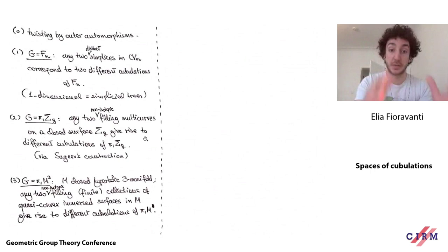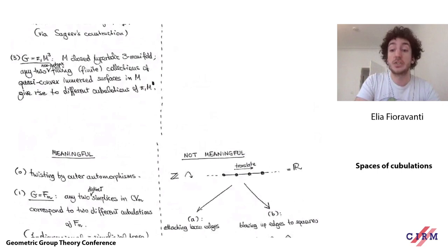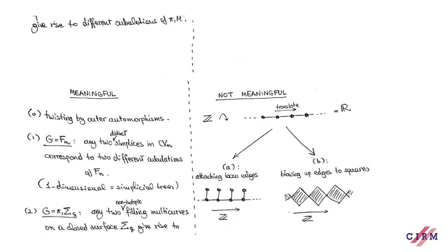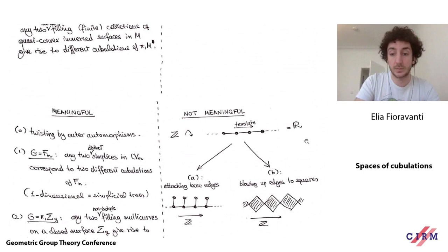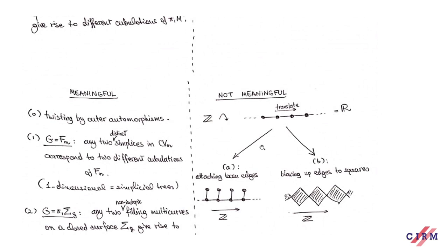These are all nice examples based on the geometry of specific groups. Now let me describe ways of changing a cubulation that are not meaningful — because they're not based on the geometry of any group. Let me show them in the case of Z acting on the real line: we cubulate the real line by putting a vertex at every integer point and joining them by edges, with Z translating one notch to the right. There are two procedures I'll call A and B — they work in absolute generality and will come up later.